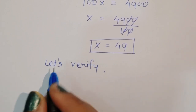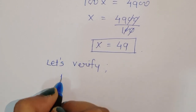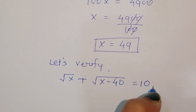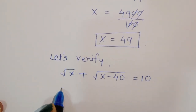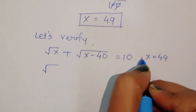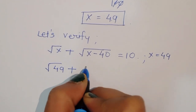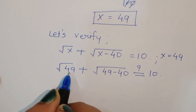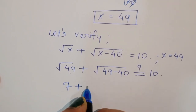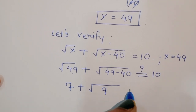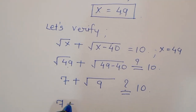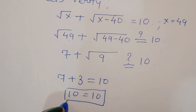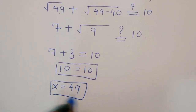Let's verify. Our question is: square root of x plus square root of x minus 40 is equal to 10. Substituting x equals 49: square root of 49 plus square root of 49 minus 40 equals 7 plus square root of 9, which is 7 plus 3, equal to 10. So x equals 49 is the correct solution. Thank you.